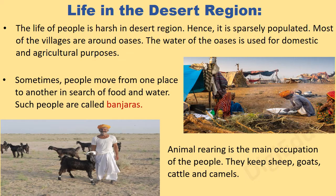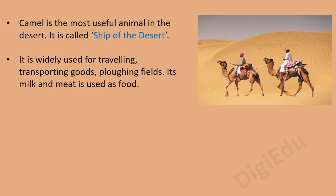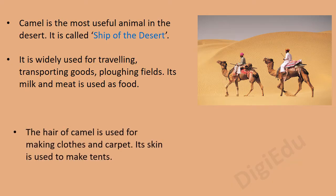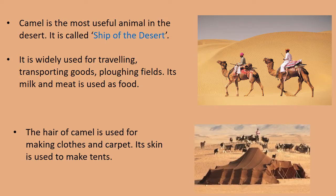Animal rearing is the main occupation of the people living here. They keep sheep, goats, cattle and camels. The camel is the most useful animal in the desert and is called the ship of the desert. It is widely used for travelling, transporting goods and ploughing fields. Its milk and meat are used as food. The hair of the camel is used for making clothes and carpets, and its skin is used to make tents.